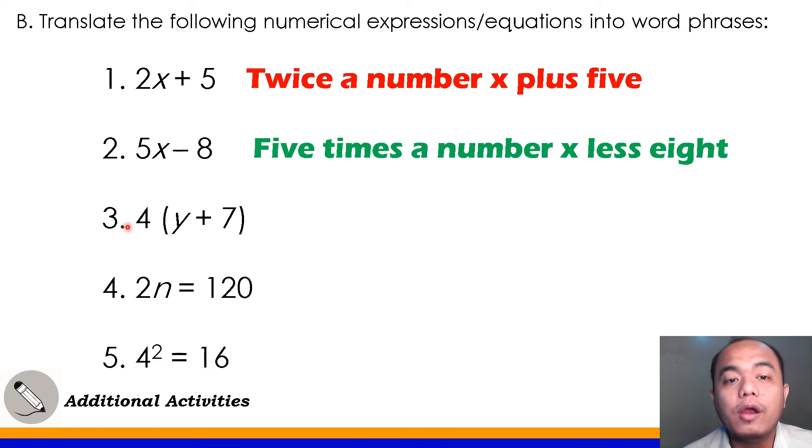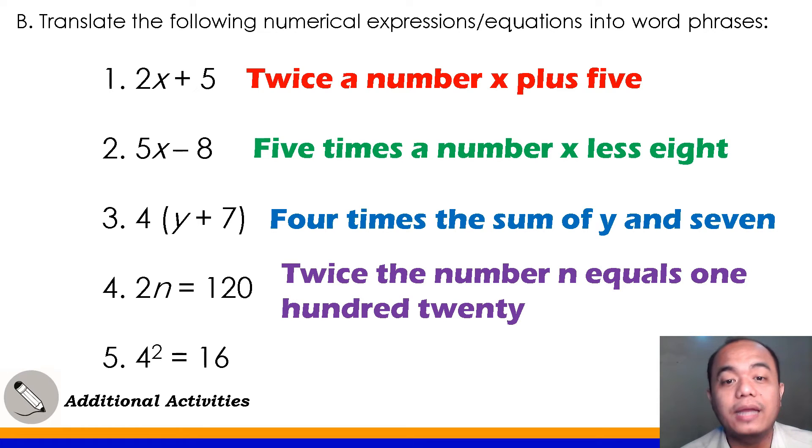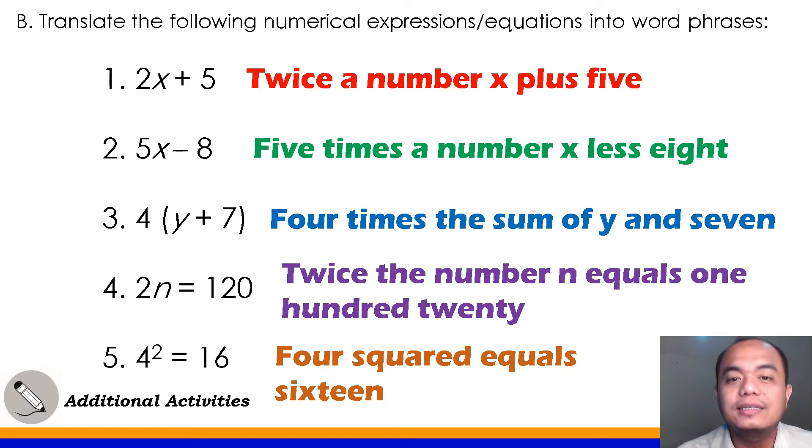Number 3, 4 times Y plus 7. You could also say 4 times the sum of Y and 7. Number 4, that's 2N equals 120. As simple as that, you can answer that way. Twice the number N equals 120 would also be one of the possible answers. But if you say 2N equals 120, that's also correct. 2 times N equals 120 is also possible. Number 5, 4 squared equals 16, that's also possible. So, 4 squared equals 16. Did you get it right, class? Very good.